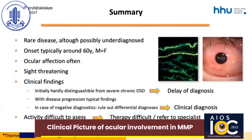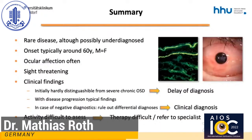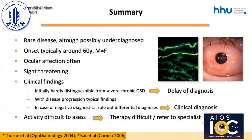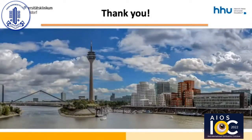The main take-home messages are that because of the common ocular affection, the often sight-threatening course, and the possible very difficult therapy, we ophthalmologists should be aware of the clinic and really need to make an effort to diagnose MMP as early as possible. In case of negative diagnostics, the diagnosis should also be established clinically after possible differential diagnoses have been ruled out. In doubt or in lack of experience, especially regarding systemic immunosuppressive therapy, you might consider referring the patient to a specialized center.